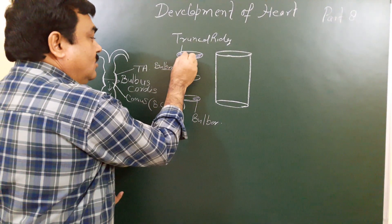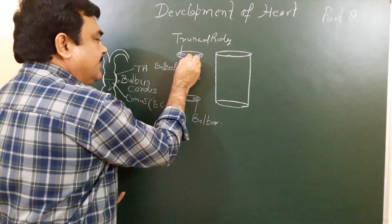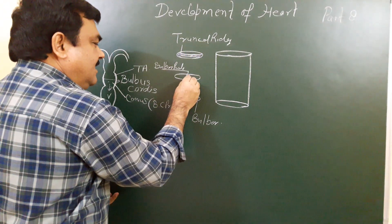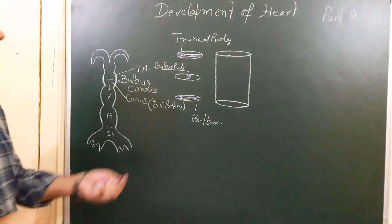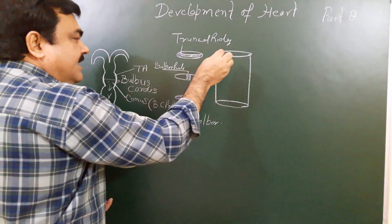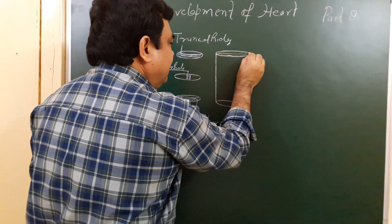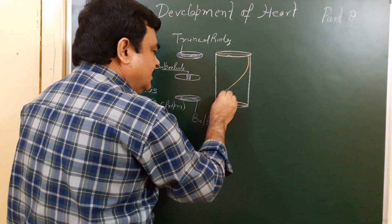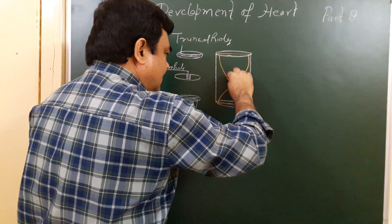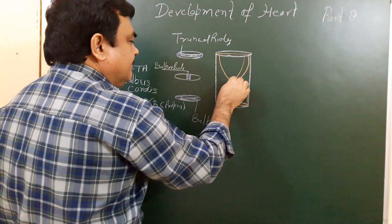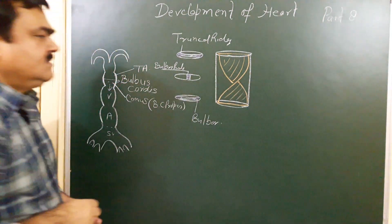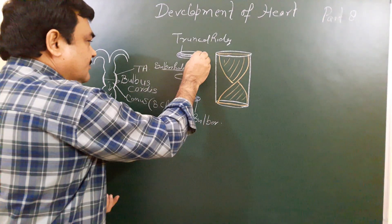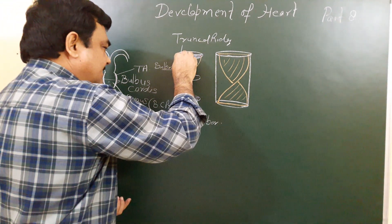These ridges grow towards the opposite side and form a continuous septum. The septum forms here, here, and here. This septum is oblique — it is twisted and oblique.